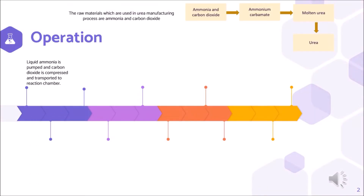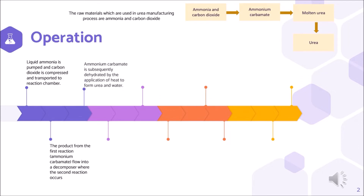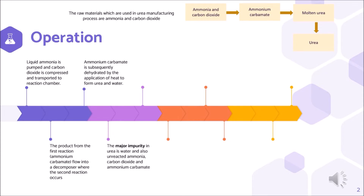Liquid ammonia is pumped and carbon dioxide is compressed and transported to the reaction chamber. The product from the first reaction, ammonium carbamate, flows into a decomposer where the second reaction occurs. Ammonium carbamate is subsequently dehydrated by the application of heat to form urea and water. The major impurities in urea are water and also unreacted ammonia, carbon dioxide, and ammonium carbamate.